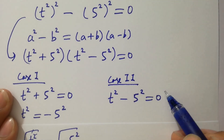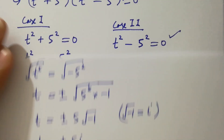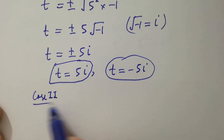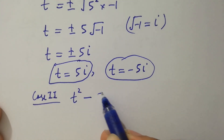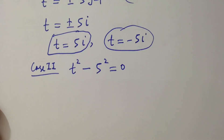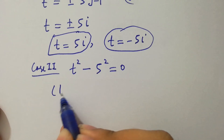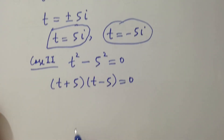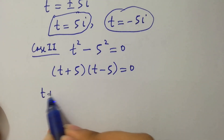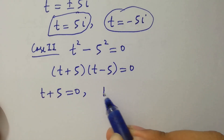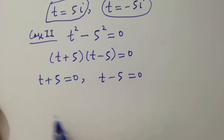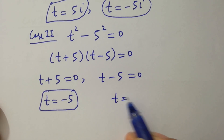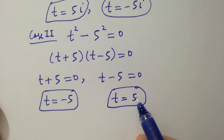From Case 2, t squared minus 5 squared equal to 0. Applying the formula a squared minus b squared equals (a plus b)(a minus b), we get (t plus 5)(t minus 5) equal to 0. Either t plus 5 equals 0 or t minus 5 equals 0, giving t equal to minus 5 and t equal to plus 5 — our real solutions.